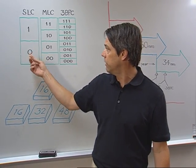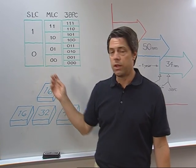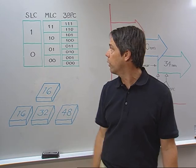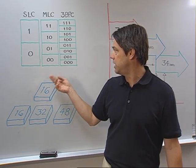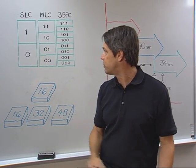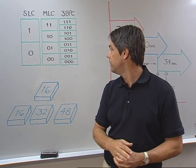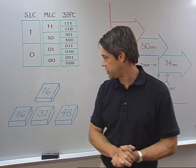SLC stands for single-level cell, and it means the flash cell is storing one of two states, a zero or a one logically. MLC, multi-level cell, means two bits per cell and one of four logic states, and then 3-bit per cell is one of eight logic states.